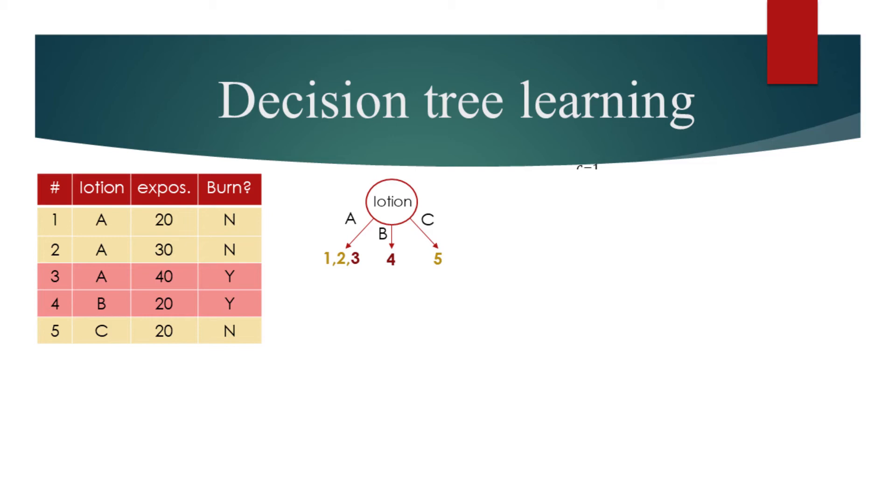On the contrary, when a node clusters data points that belong to one class only, the node is said to be pure. The leaves in the middle and on the right are pure.